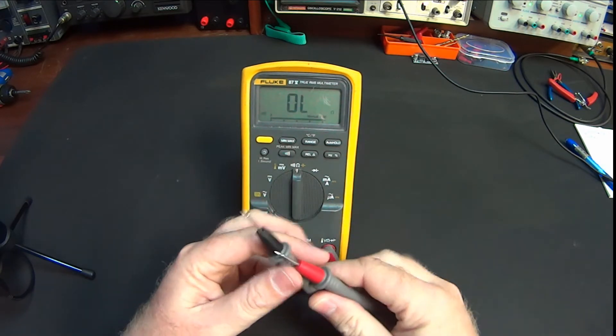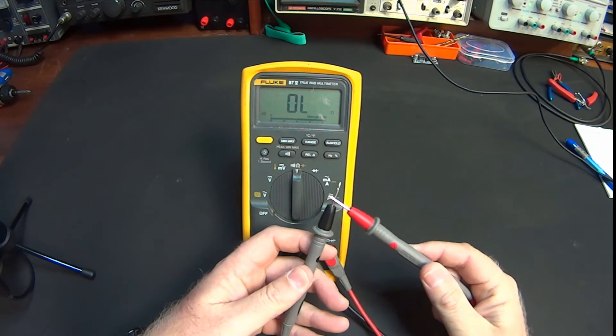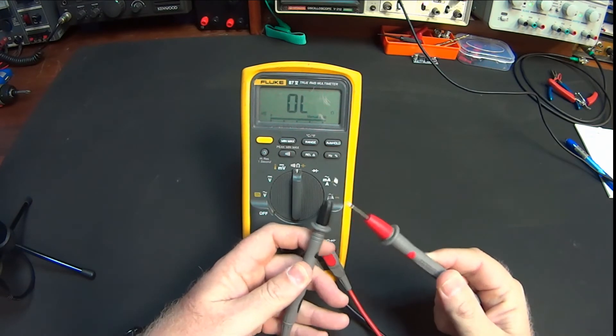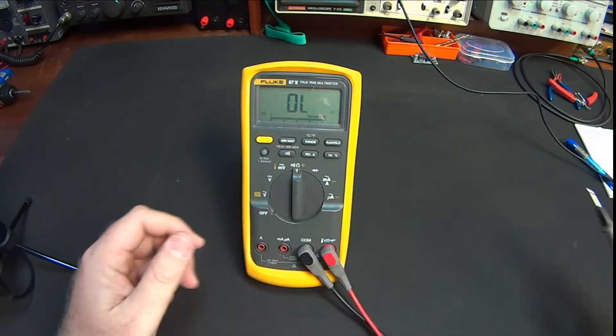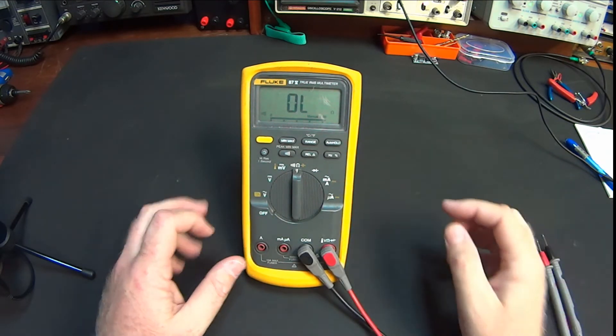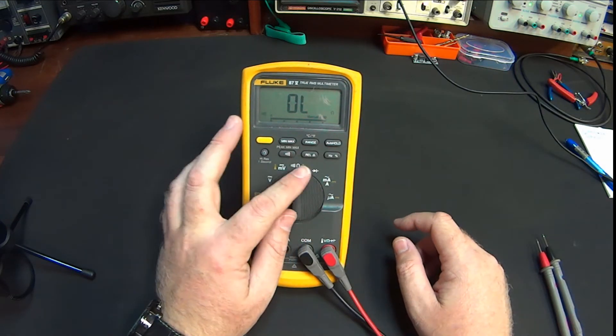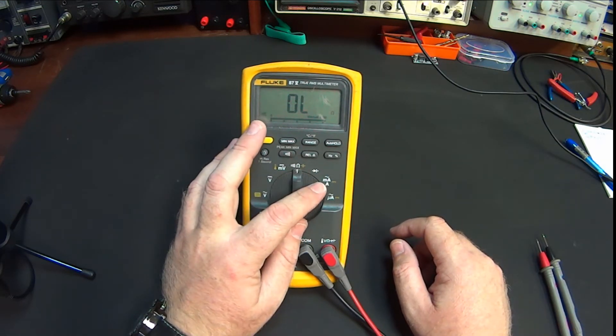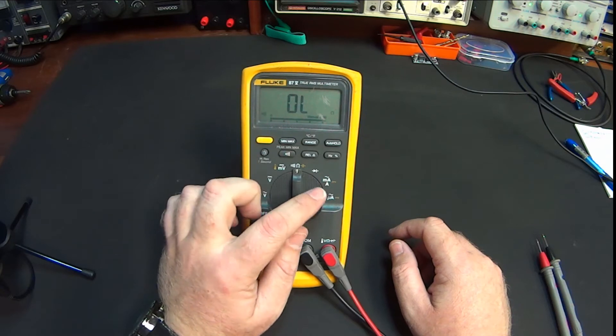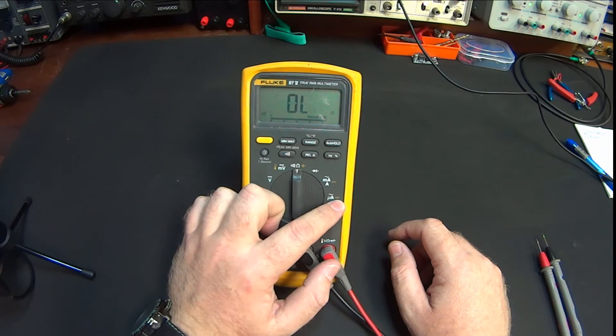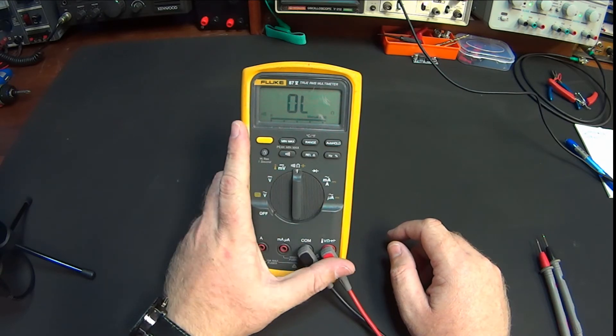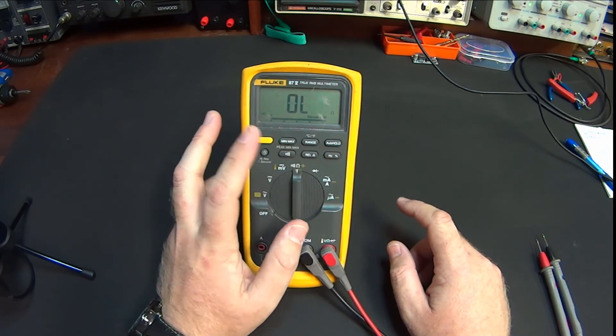And then, of course, you've got your beep, your continuity tester. As you can see, it's very responsive and very quick, which is fantastic for making measurements. Then, of course, you've got your diode test, your traditional diode test. You've got your milliamps and amps AC, and of course you've got DC as well. And then, more importantly, microamps AC and DC. So as you can see, that's a lot of functionality.